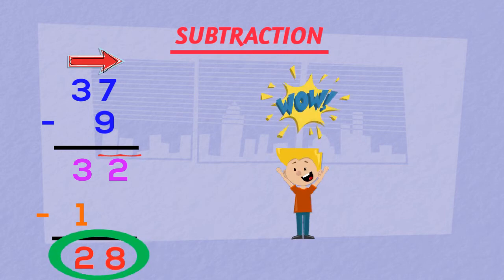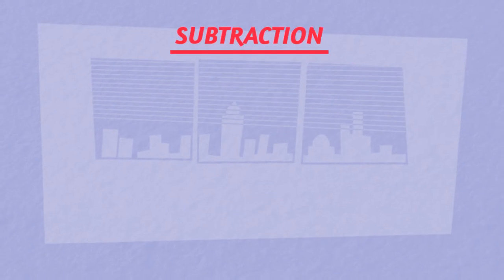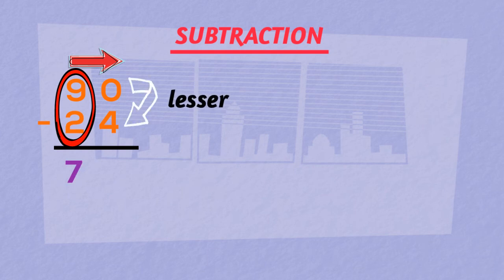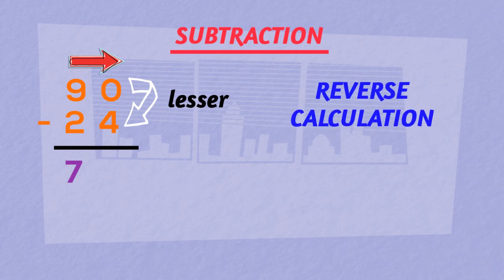Our last example, 90 minus 24. Same thing, we will go from left to right. 9 minus 2 is 7. Now 0 is lesser than 4, so we will go for reverse calculation. That's 4 minus 0. We get 4 with a bar on it.